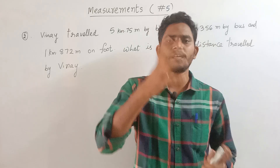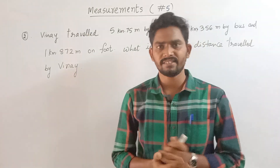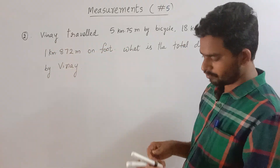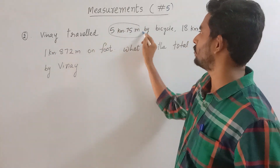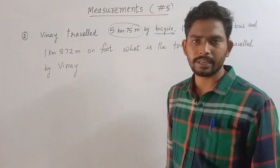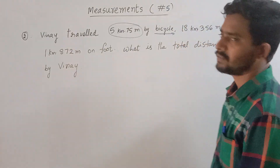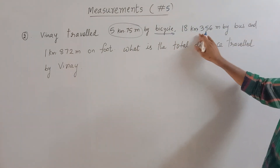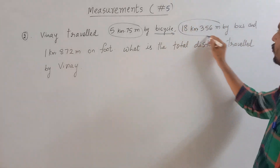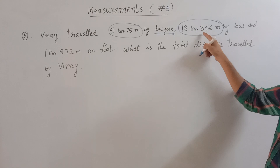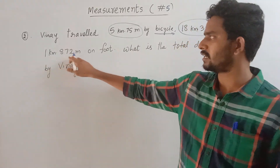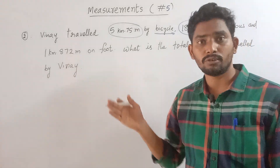Vinay traveled 5 kilometers and 75 meters by bicycle. By bus, 18 kilometers and 356 meters were traveled, and 1 kilometer and 872 meters on foot.